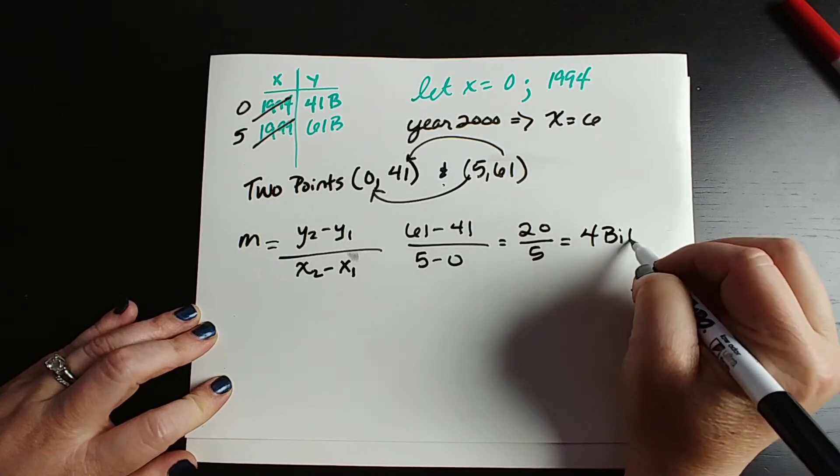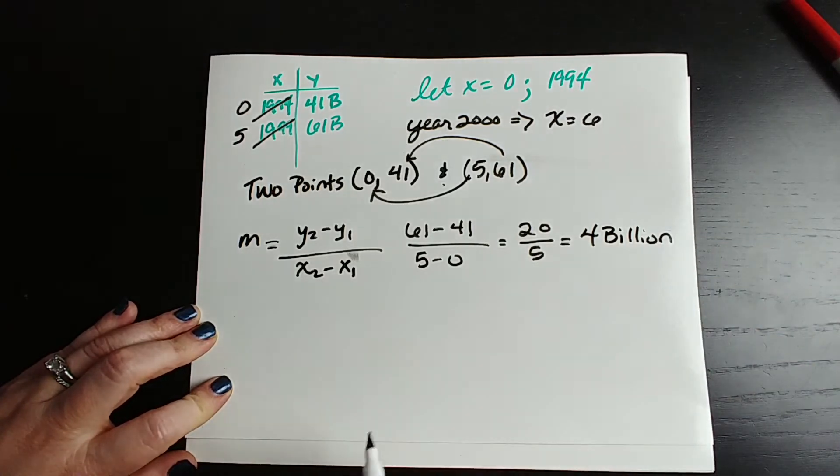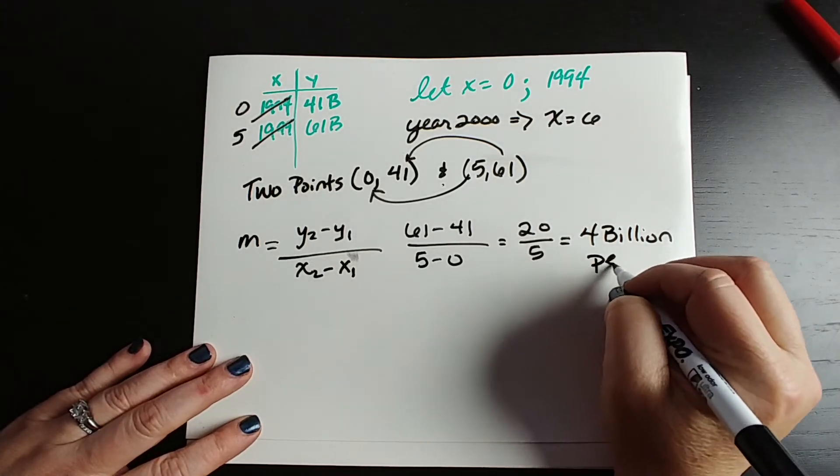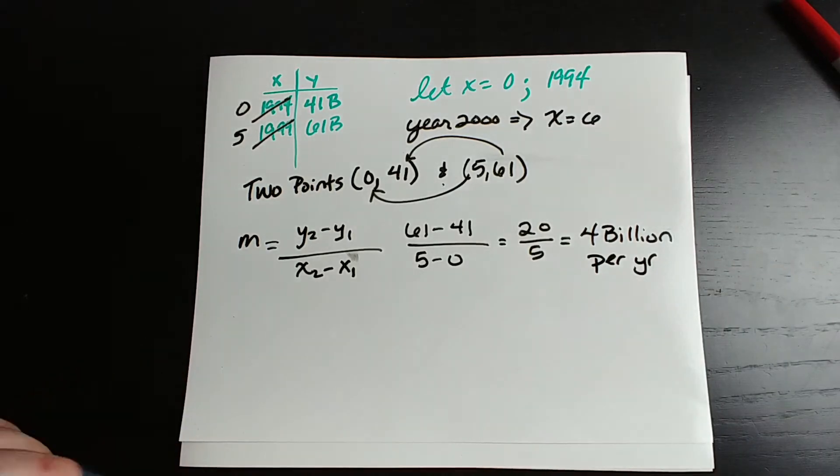And remember, we're dealing with billions. So 4 billion, and it's really what we're looking at as an increase. So imports grew 4 billion per year. So we'll need to know that for the end.